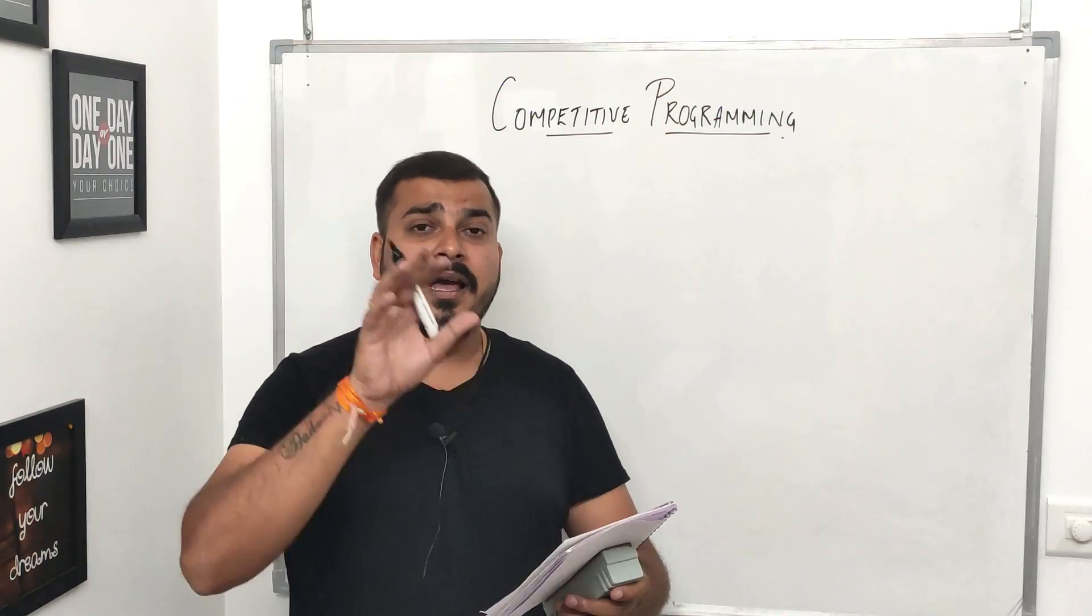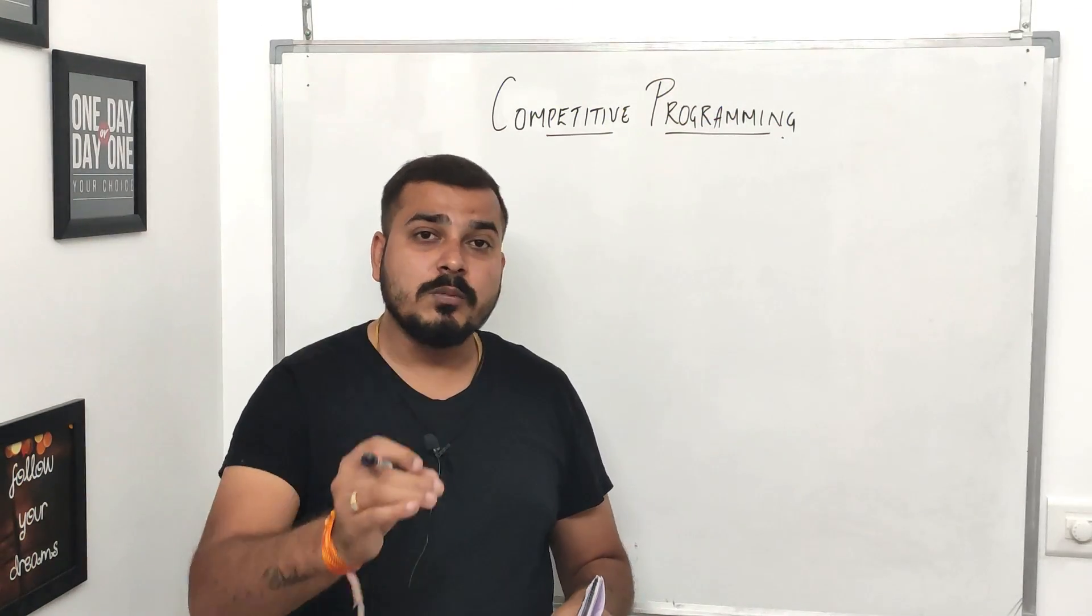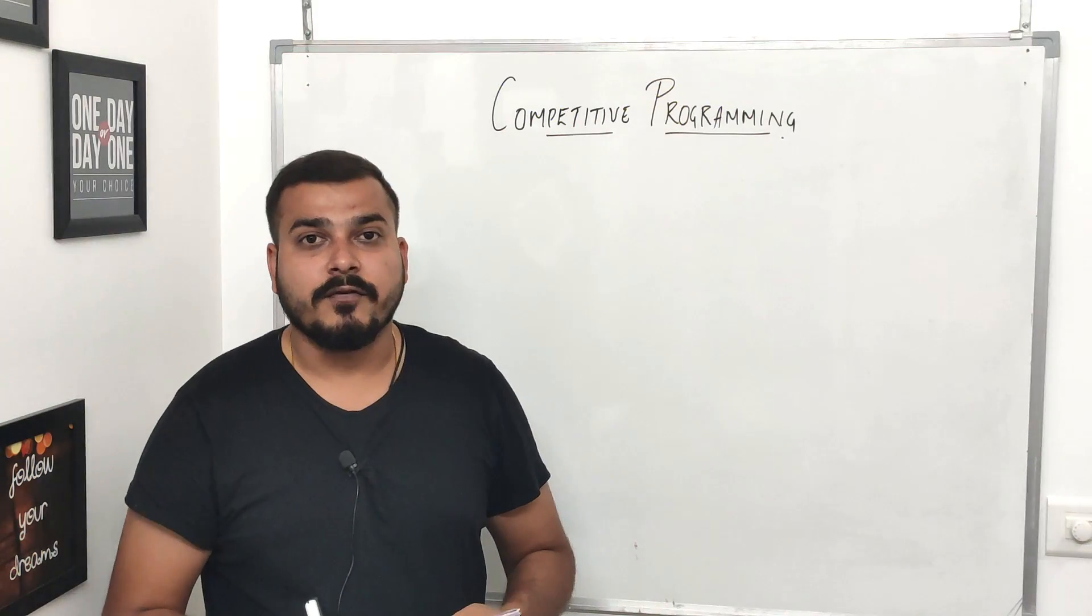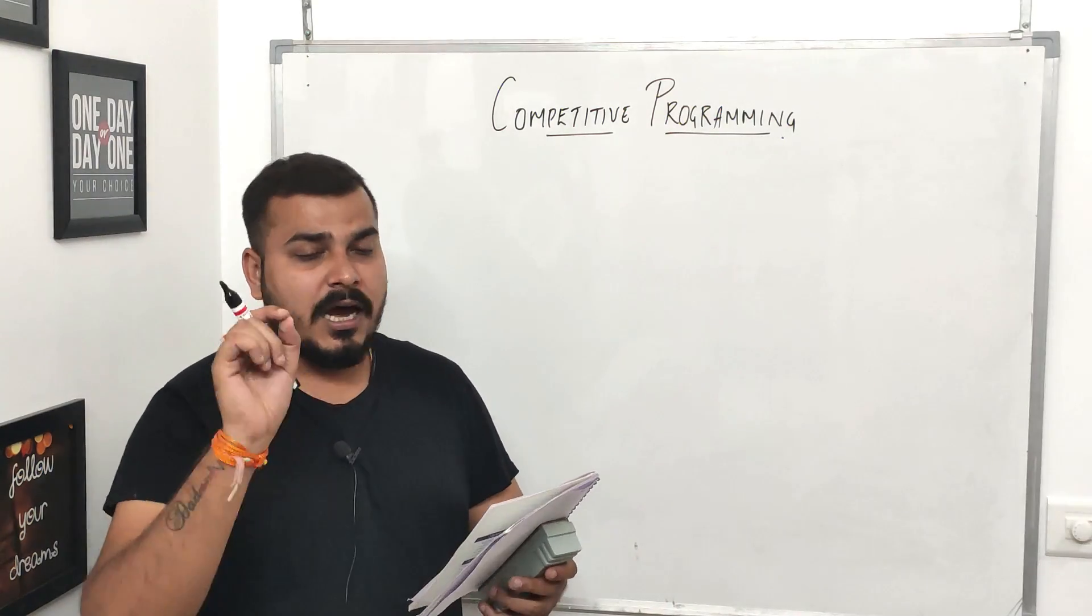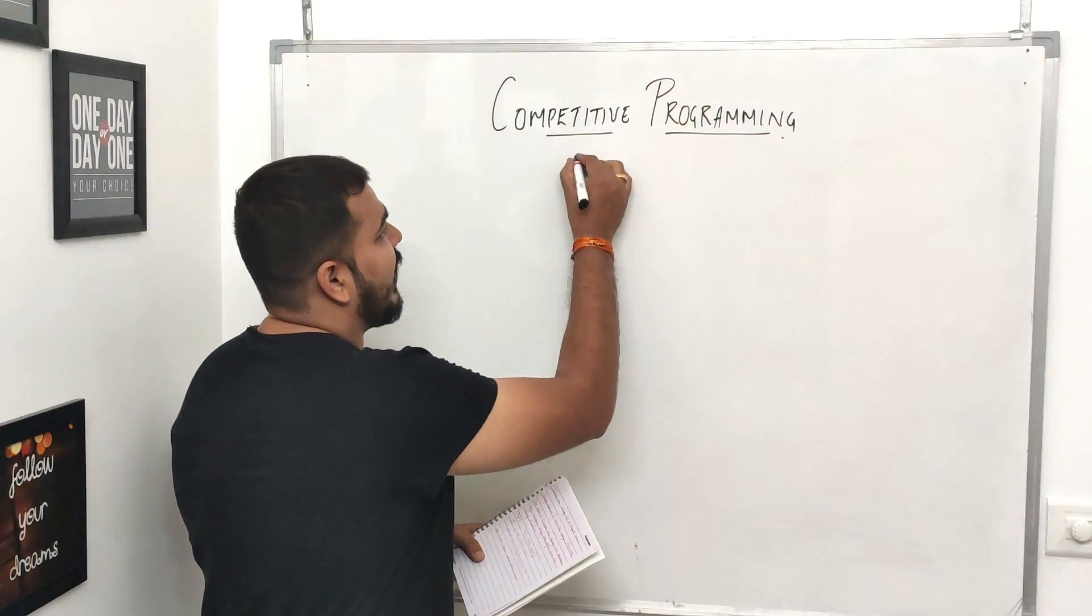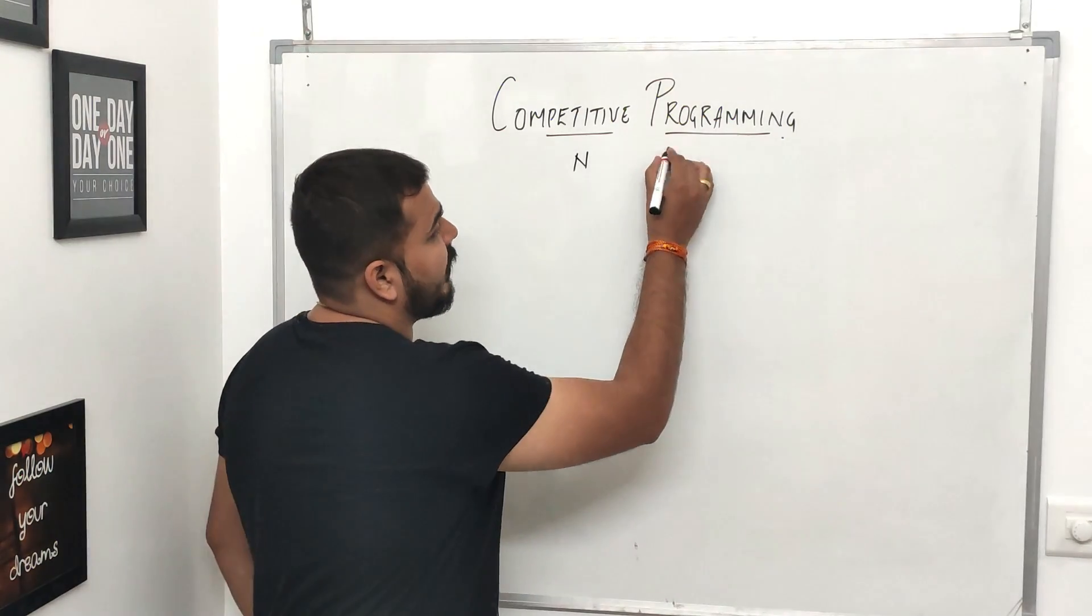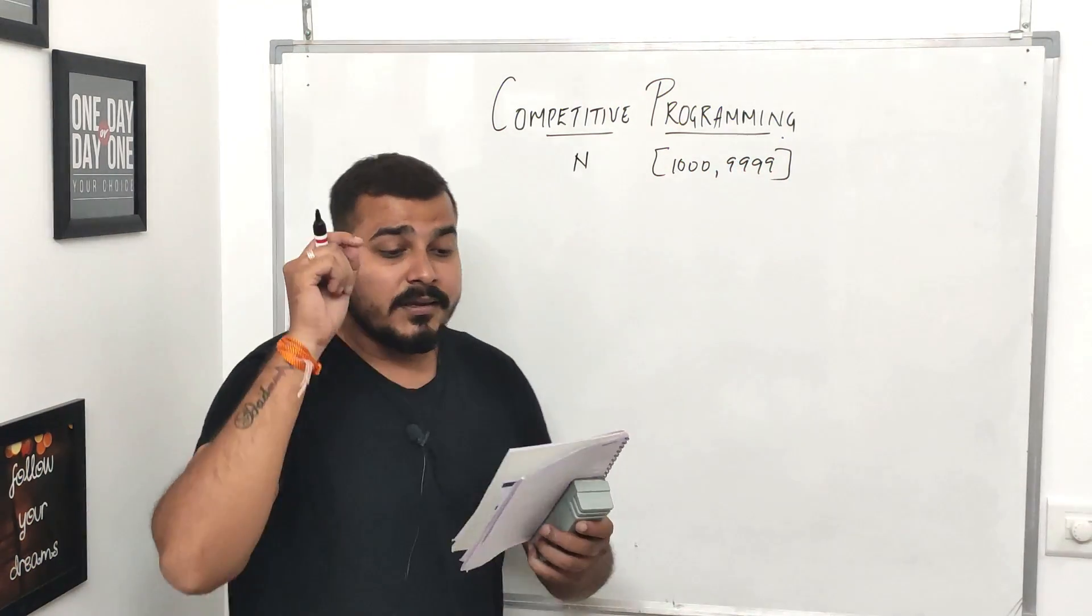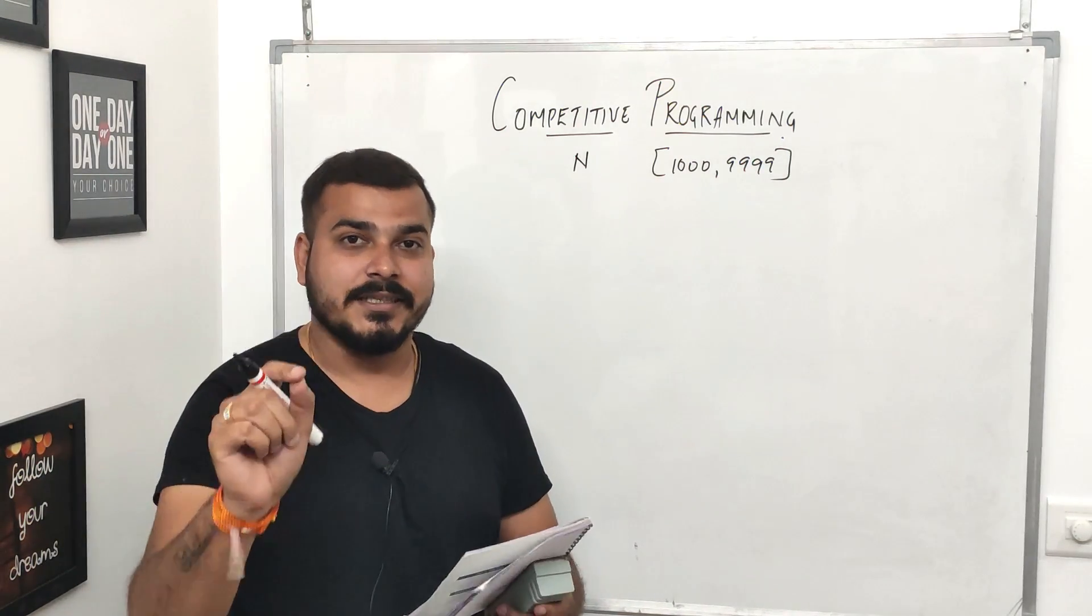Remember, this particular problem statement is an interview question from top notch product based companies like Ola, Uber, Facebook, Amazon, Google. This question will be put up in the descriptions for your reference. Suppose we have an array of n integers where every element is from the range 1000 to 9999. The task is to make the array non-decreasing by changing only one digit.